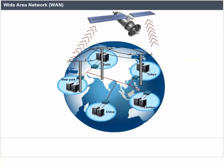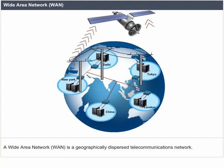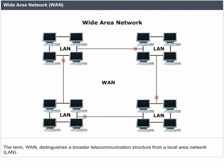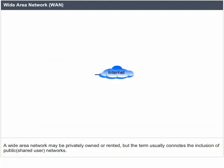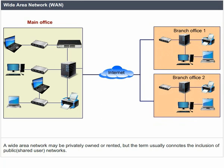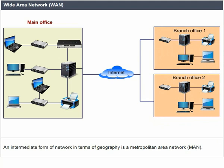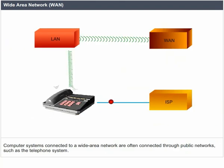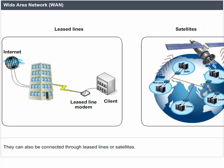Wide Area Network. A Wide Area Network is a geographically dispersed telecommunications network. The term WAN distinguishes a broader telecommunications structure from a local area network (LAN). A WAN may be privately owned or rented but usually includes public shared user networks. An intermediate form is a metropolitan area network. Computers connected to a WAN are often connected through public networks such as the telephone system, leased lines, or satellites.